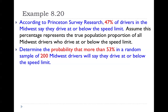Determine the probability that more than 53% in a random sample of 200 Midwest drivers will say they drive at or below the speed limit. We can't confuse this percentage — 53% is a sample proportion, while 47% is the population proportion. Because the wording says 53% in a random sample of 200, that means 53% is considered a sample proportion.